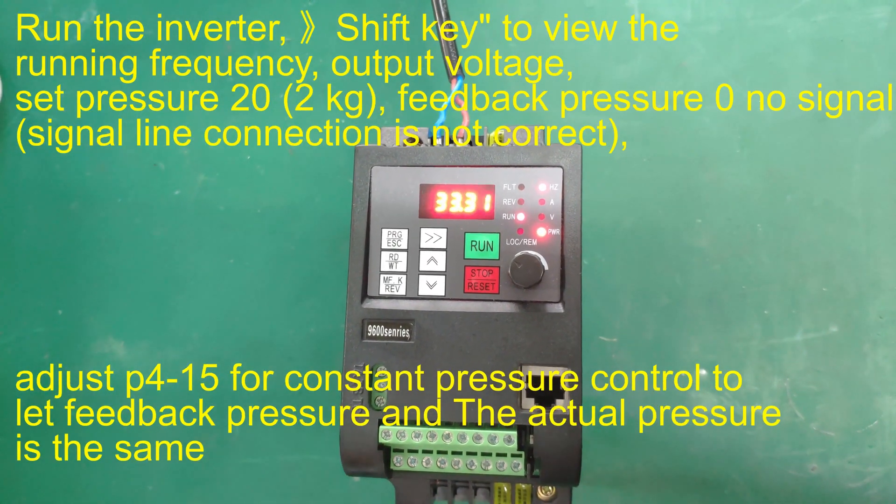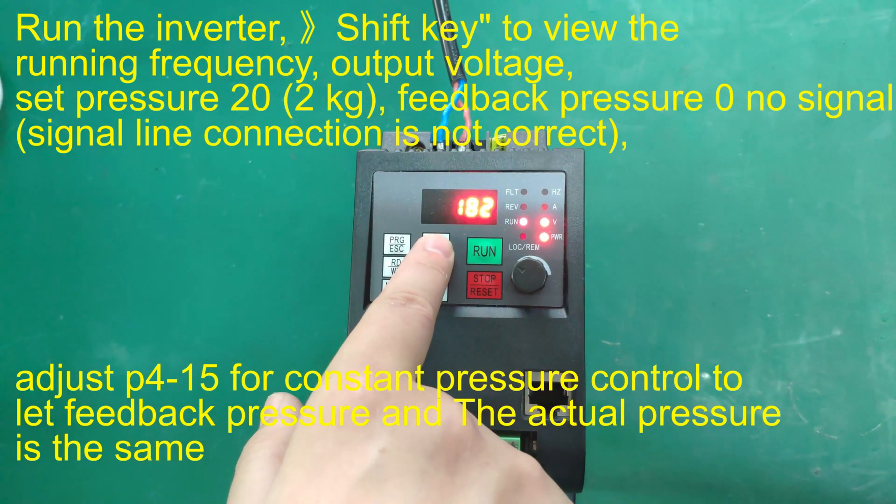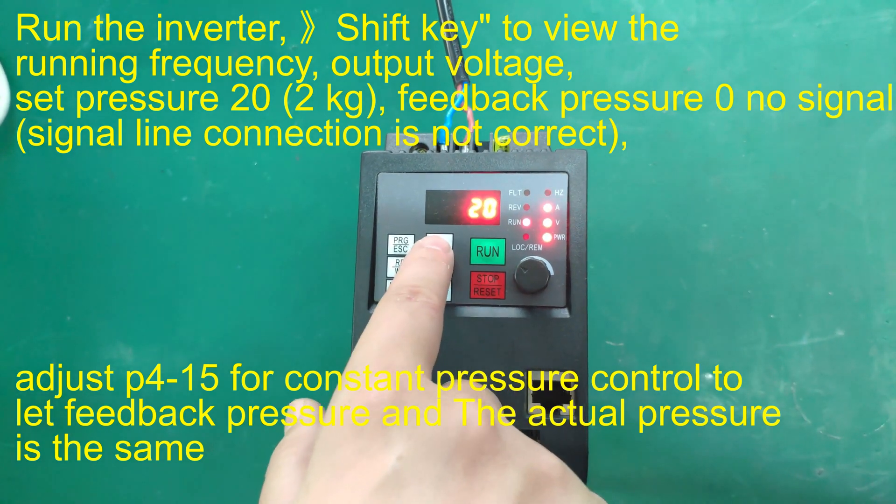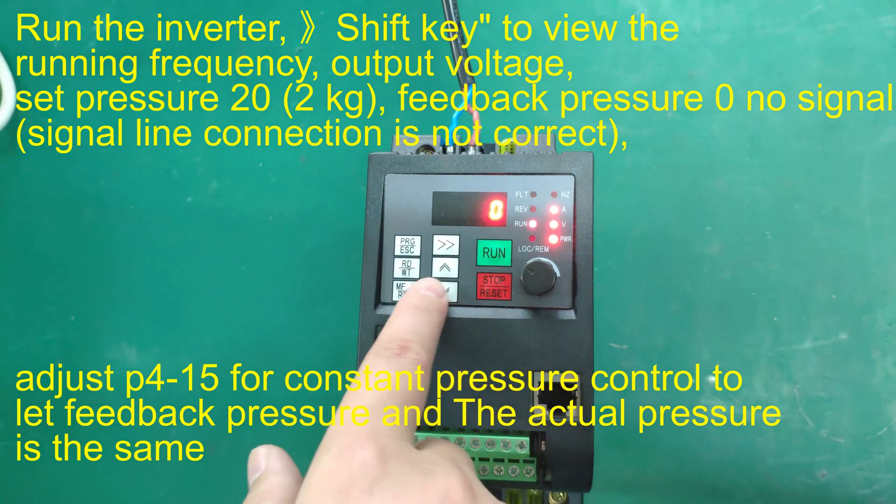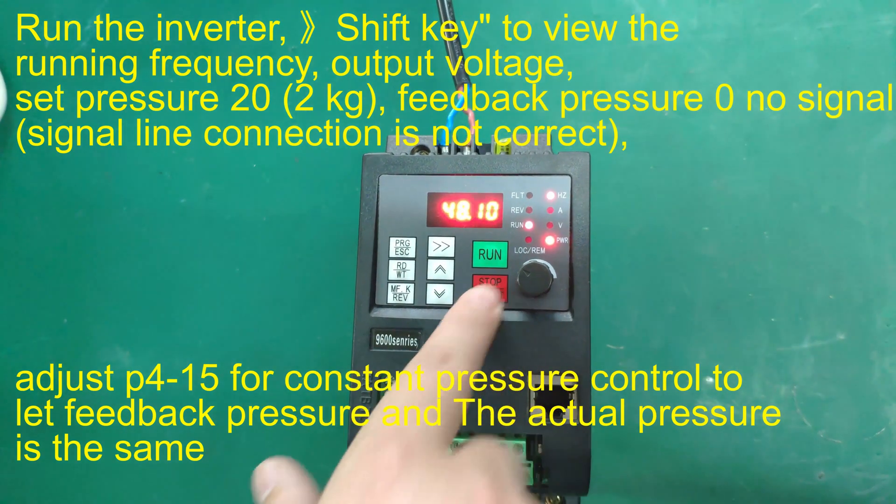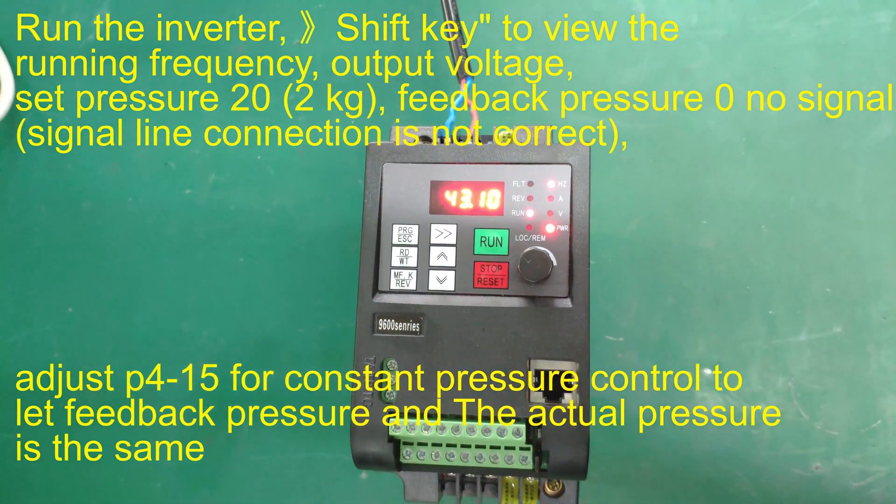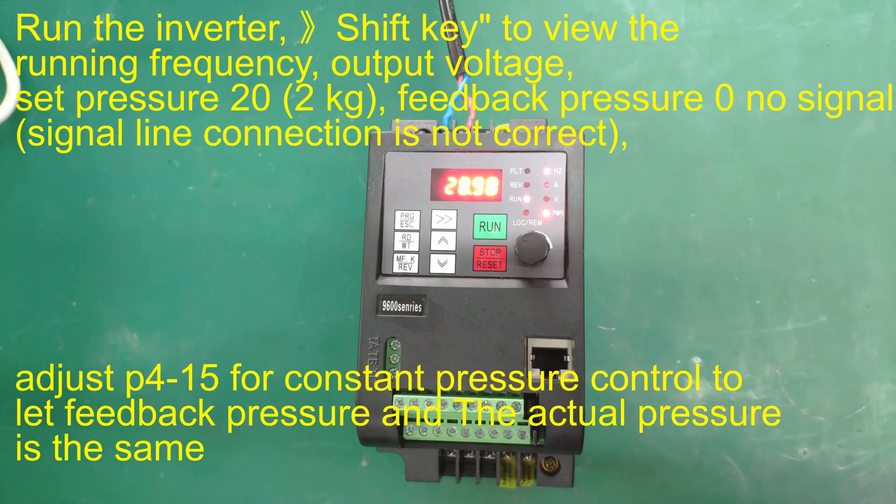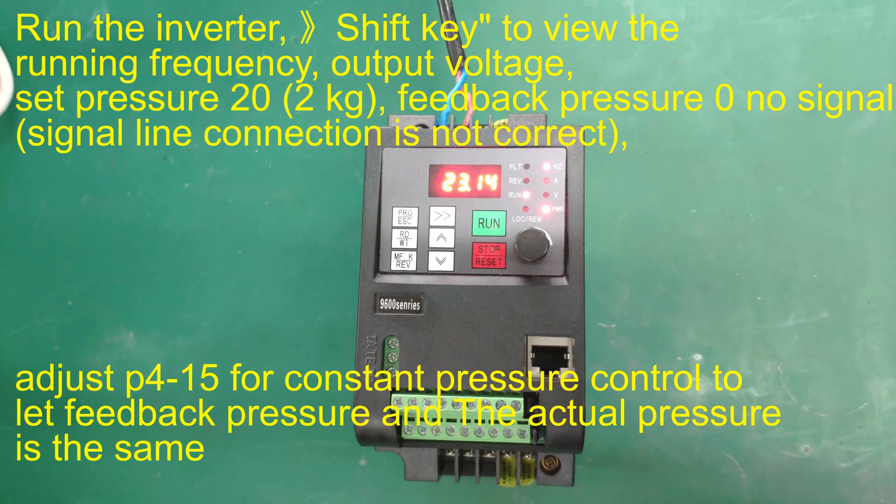Run the inverter, shift key to view the running frequency, output voltage, set pressure 20 (2kg), feedback pressure 0 no signal (signal line connection is not correct). Adjust P4-15 for constant pressure control to let feedback pressure and the actual pressure be the same.